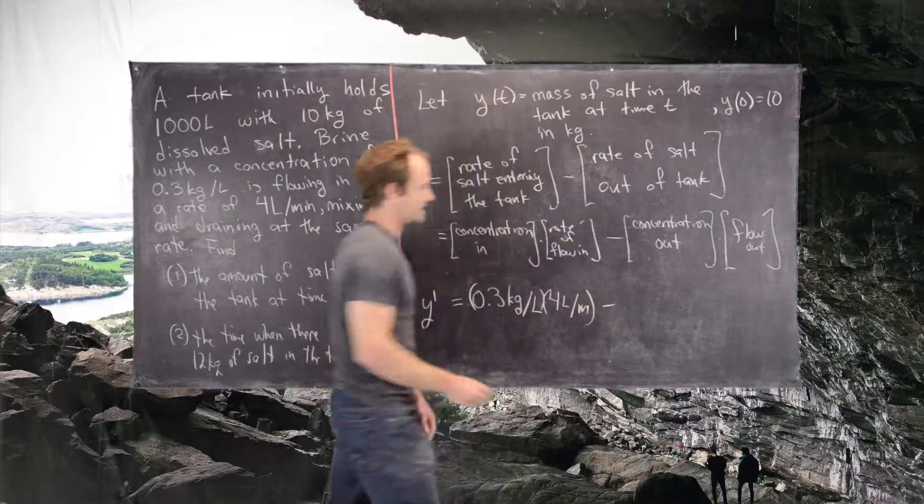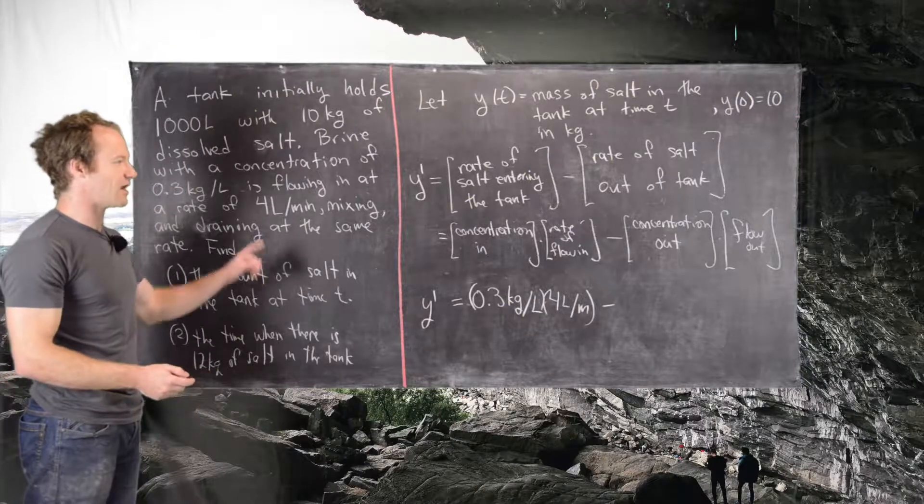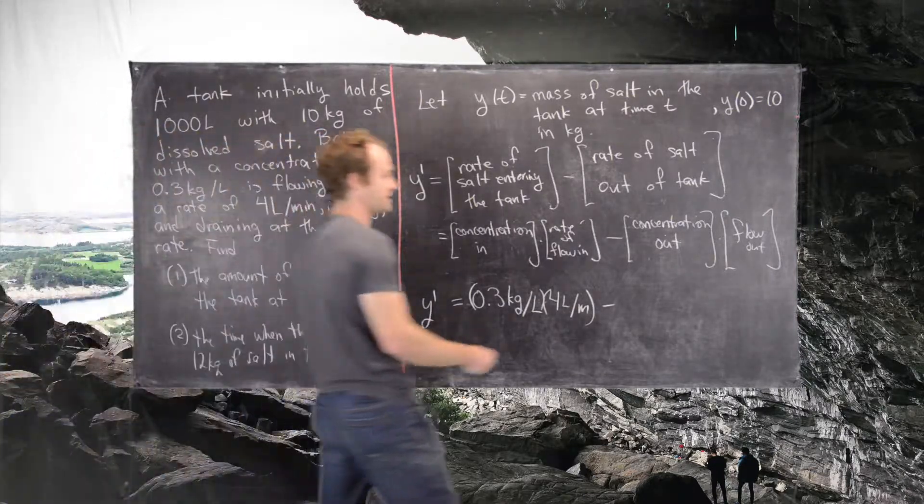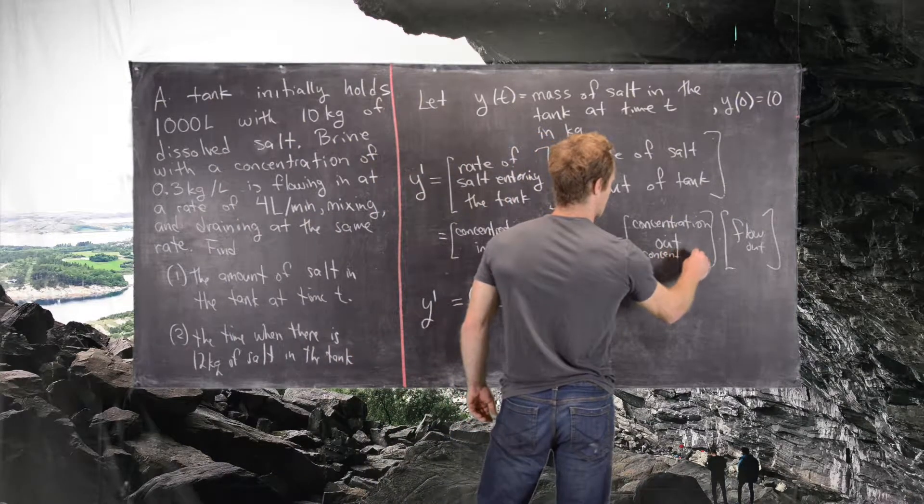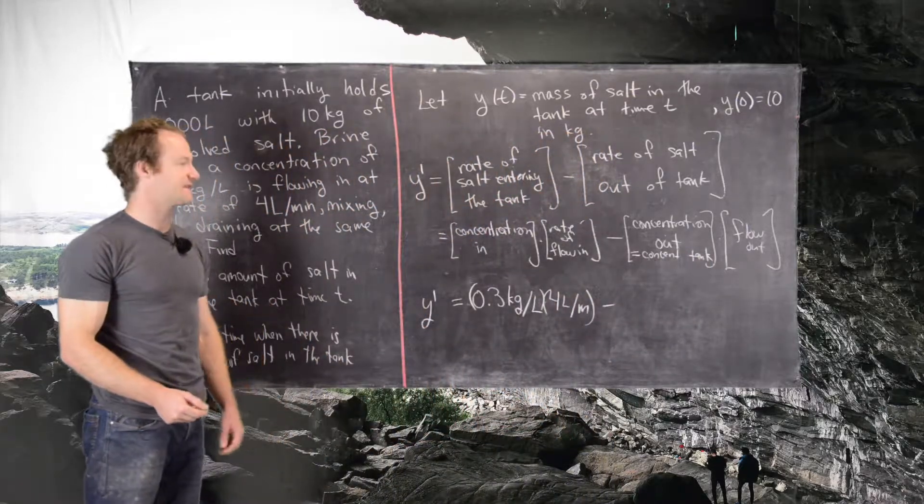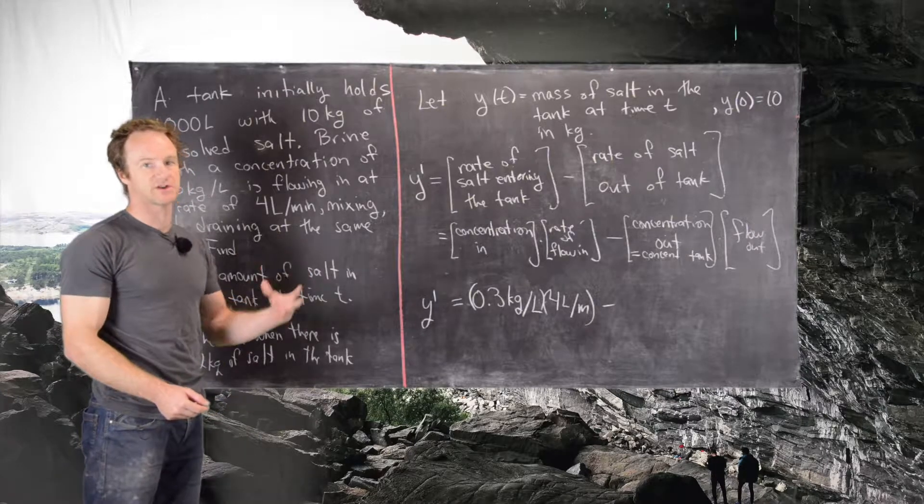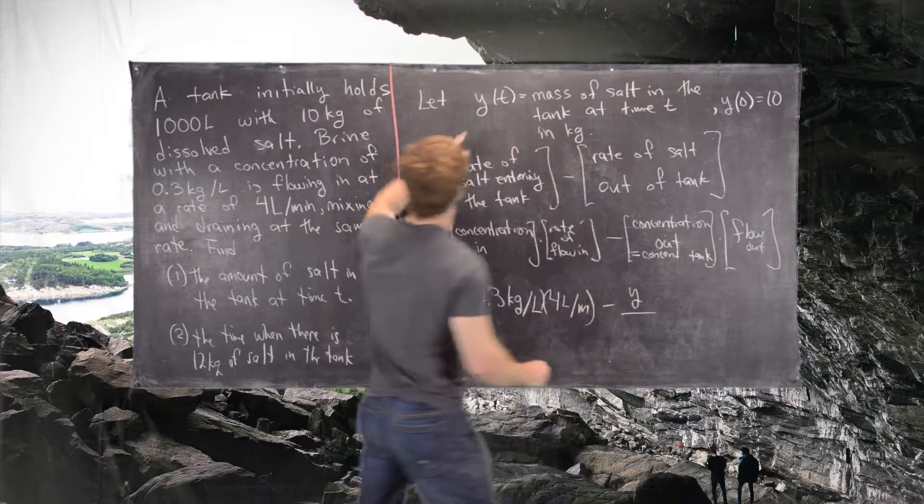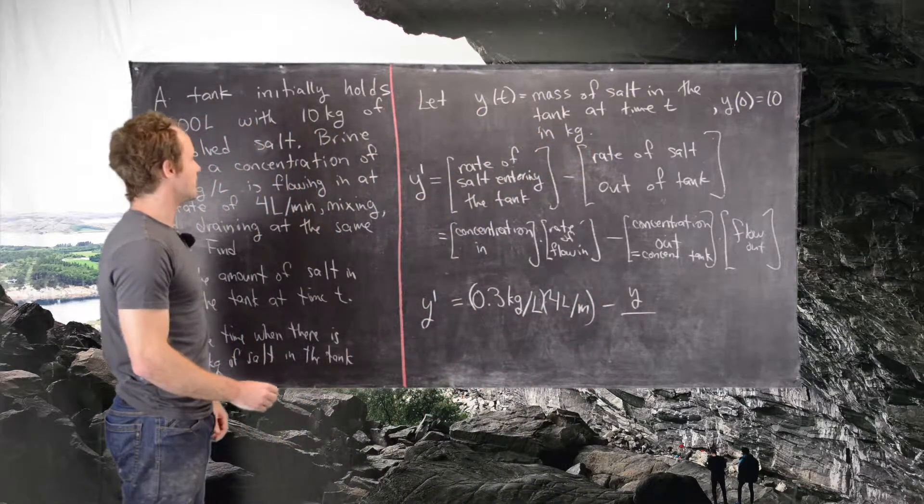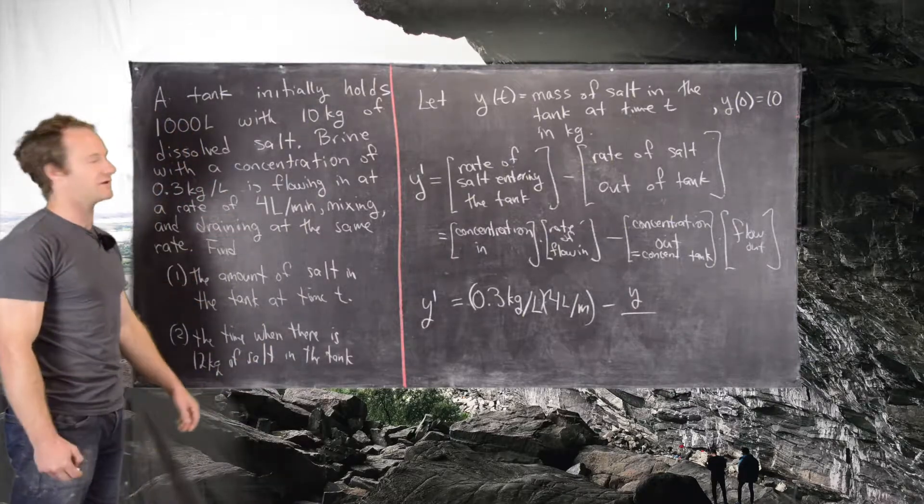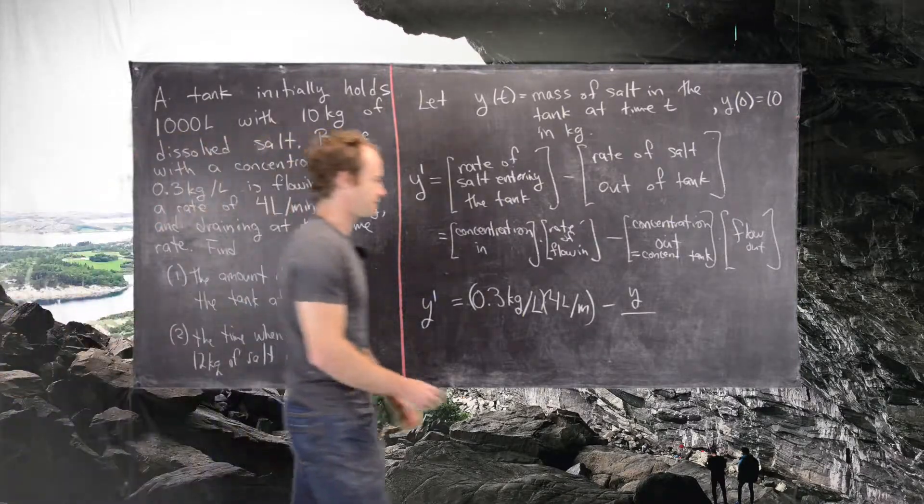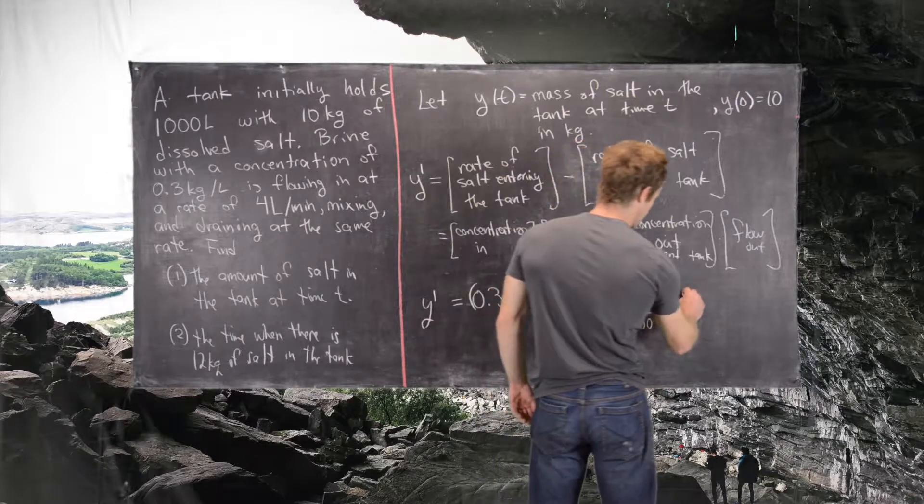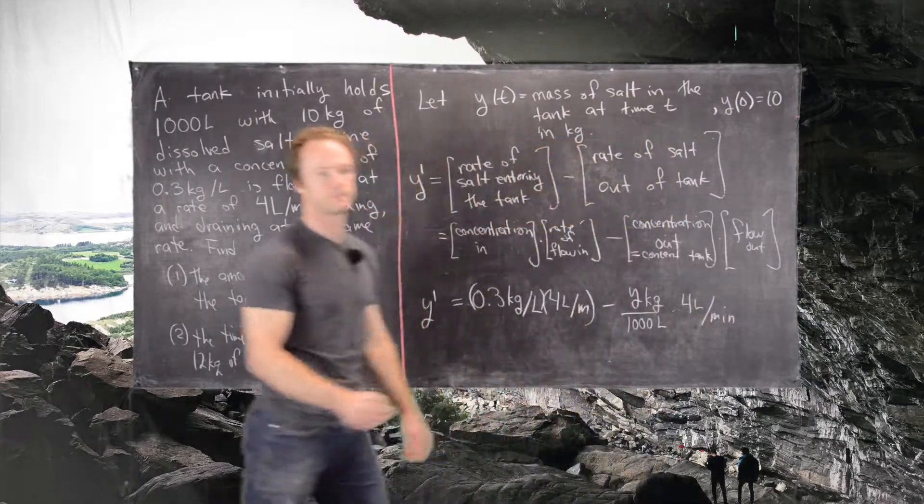The concentration out is a little bit tricky. The concentration out is equal to the concentration of the salt in the tank, which will be given by the total mass of salt in the tank divided by the volume of water in the tank. The mass of the salt in the tank is given by y. The volume of water in the tank is equal to 1,000 liters, because the volume is not changing. Four liters are going in and out. So we can write this as y kilograms over 1,000 liters times 4 liters per minute.